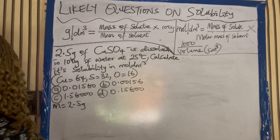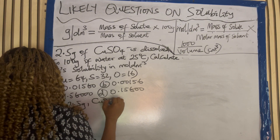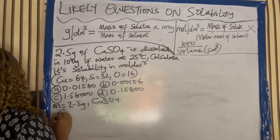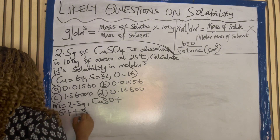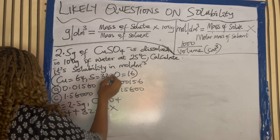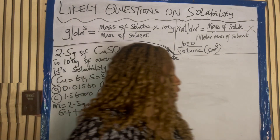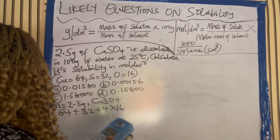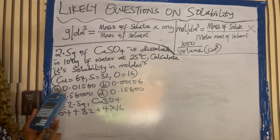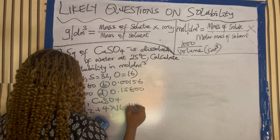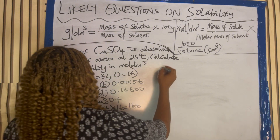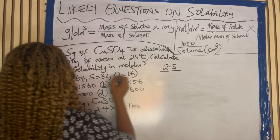We are going to find our molar mass — molar mass of copper sulfate (CuSO4). Copper is 64, plus sulfur is 32, plus 4 times oxygen 16. So: 64 plus 32 plus 64, which gives us 160. So for the molar mass we have 160.